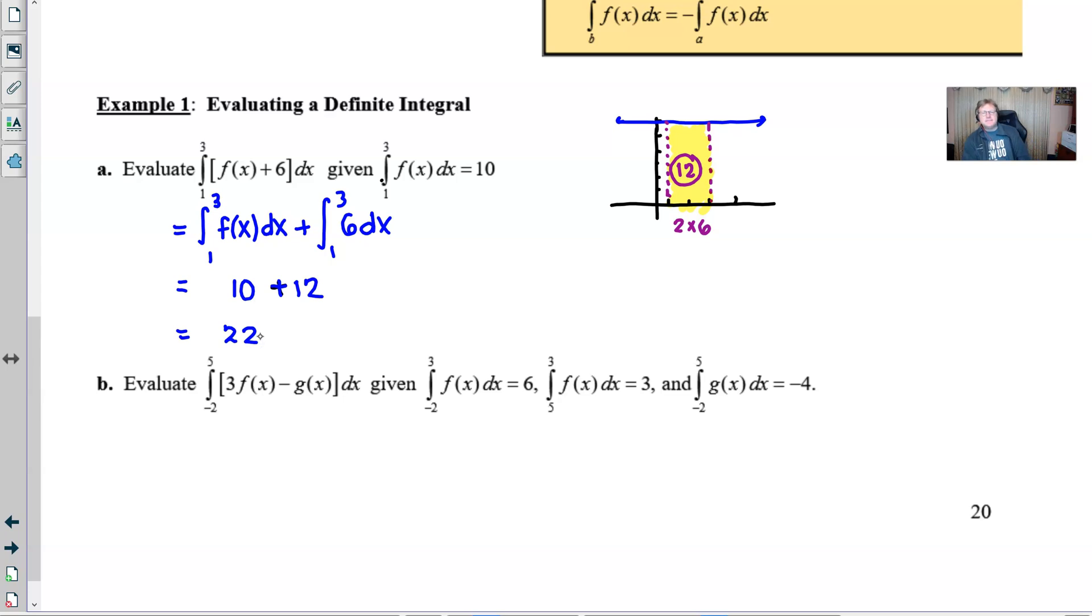Okay, if you haven't figured it out an easy way to integrate a constant with boundaries is to subtract the boundaries and multiply by the constant that you're integrating and it will always work as long as you subtract the top boundary minus the bottom boundary. All right, let's take a look at part b.